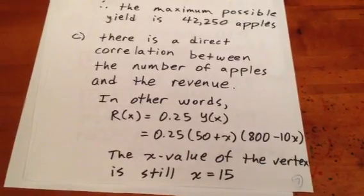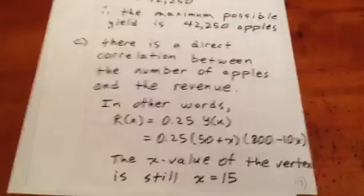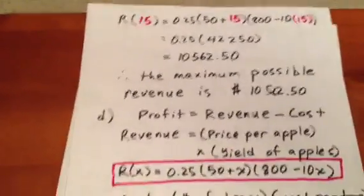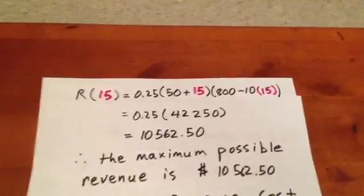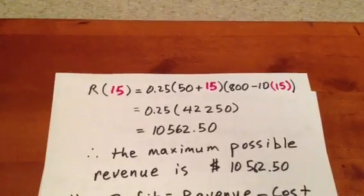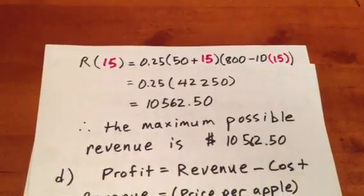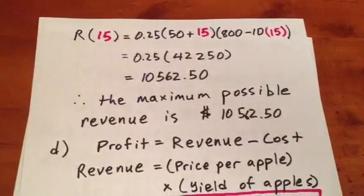The X value of the vertex in that case would still be 15. So all we need to do is plug in an X value of 15 to our revenue formula. Well, R at X is 0.25 times 50 plus X times 800 minus 10X. So when X equals 15, the revenue is $10,562.50. That's our maximum possible revenue.